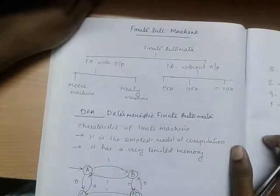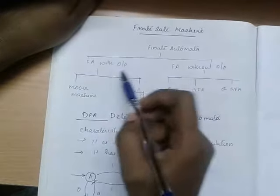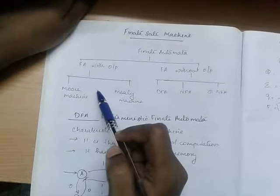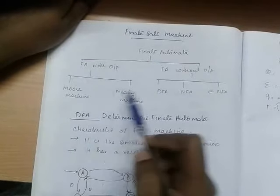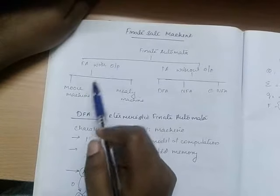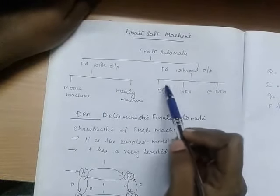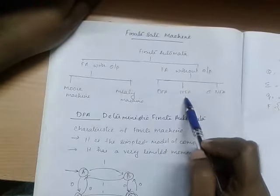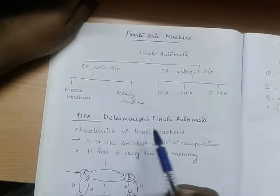Hello friends. The finite state machine is divided into mainly two categories: finite automata with output and finite automata without output. Finite automata with output is divided into two categories: Moore machine and Mealy machine. Finite automata without output is divided into DFA (deterministic finite automata), NFA (non-deterministic finite automata), and NFA with epsilon transition.